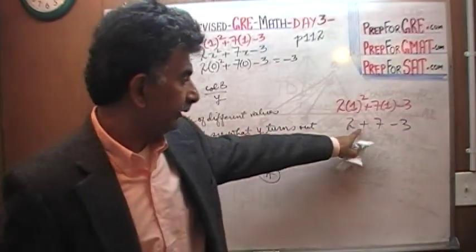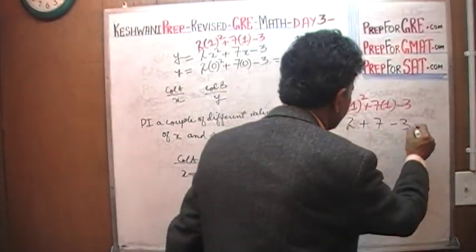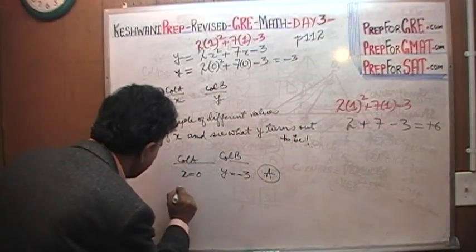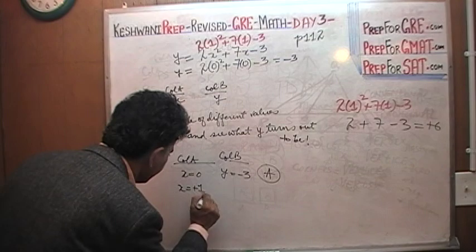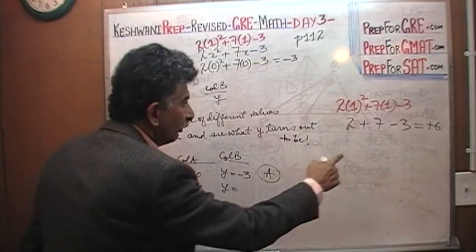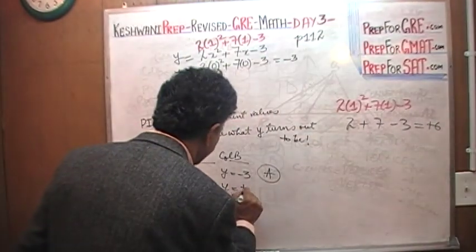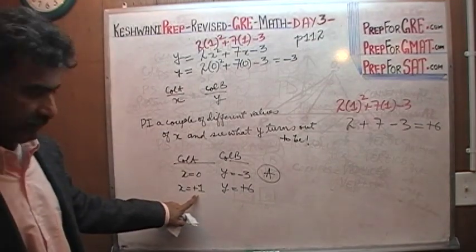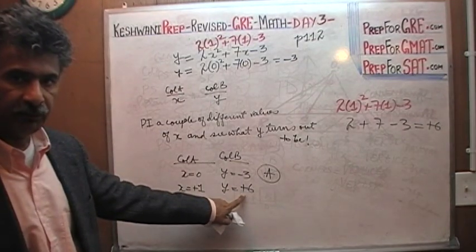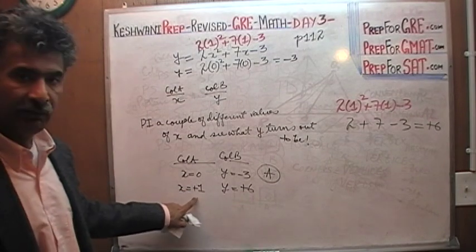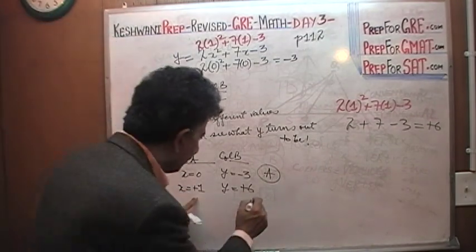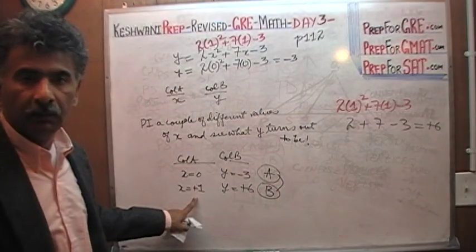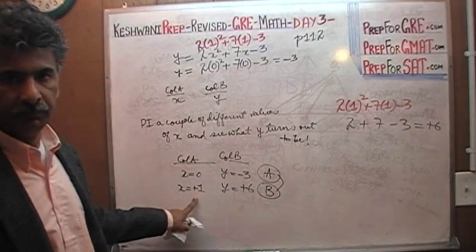So now we know that when x = positive 1, y = positive 6. Well, in this scenario, when x is positive 1, y is positive 6, the value of y is more than the value of x. In this scenario now, the answer changes, the answer is B.